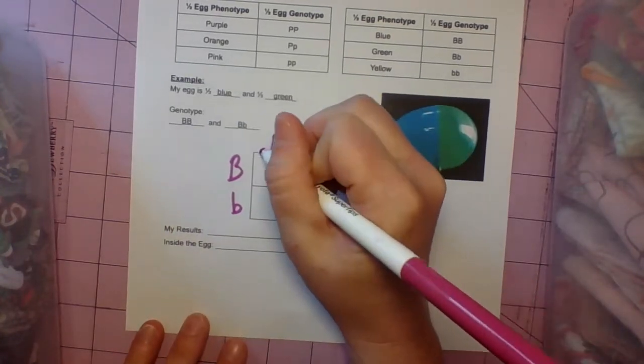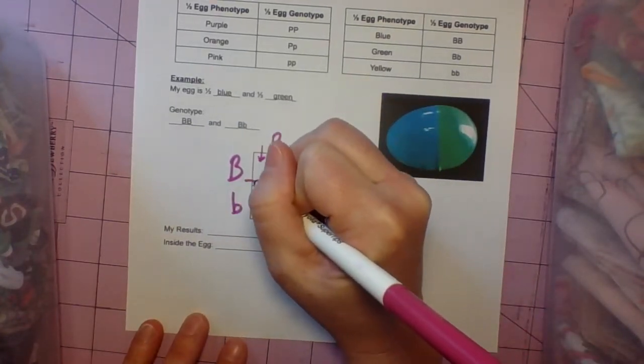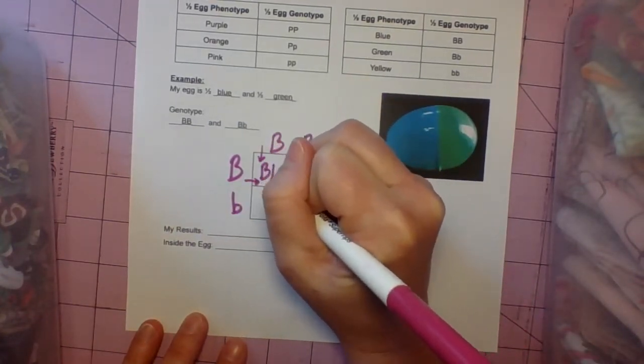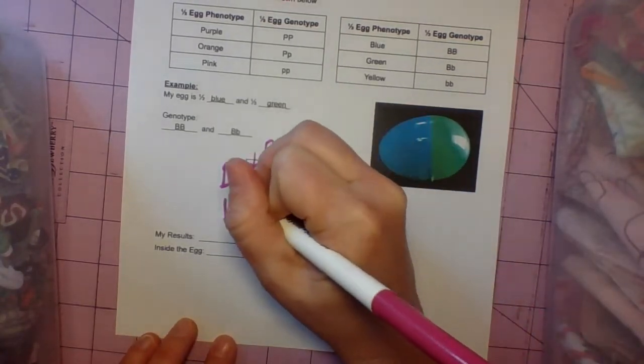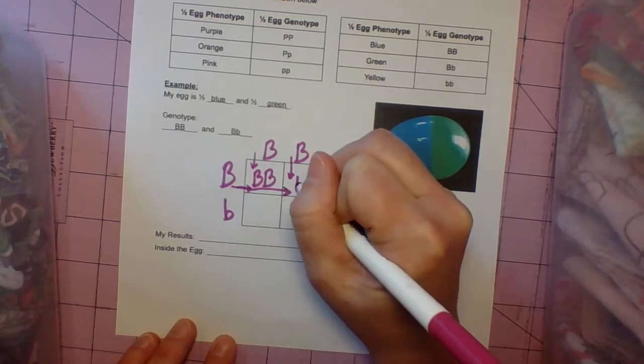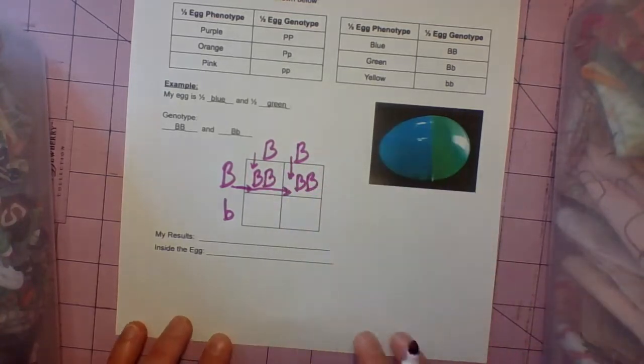For this first box, the big B comes down, this big B comes over. So that's homozygous dominant. This big B comes down, this big B comes over. And that's another homozygous dominant.